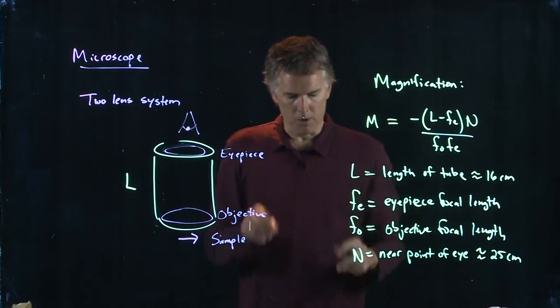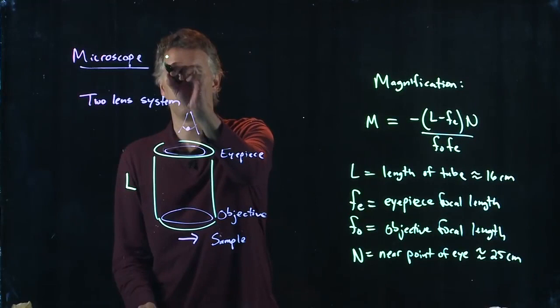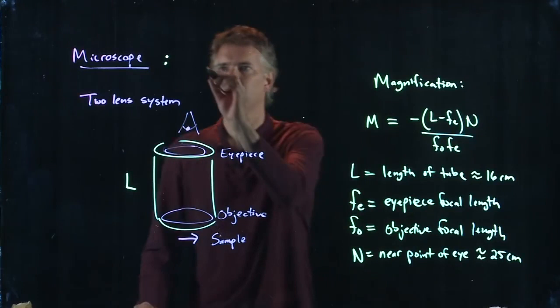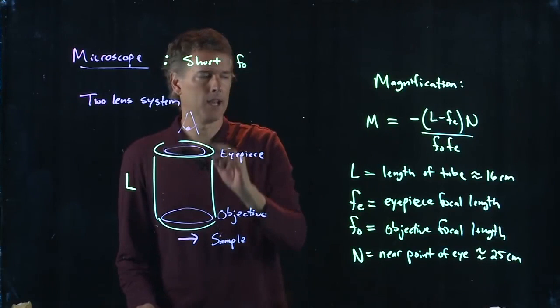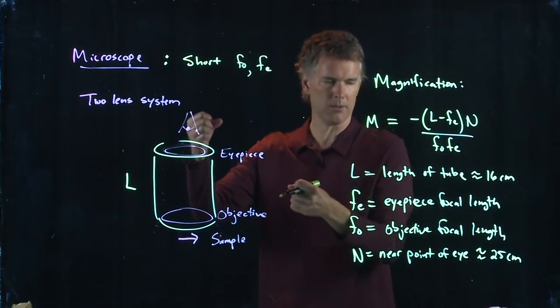So, you want good magnification in your microscope. And if you look at this equation right here, that means you want this number down here to be small. And so a microscope in fact has a short focal length FO and it has a short focal length FE. Both of those lenses have very short focal lengths. And like I said, you can take them out and you can look at them individually.